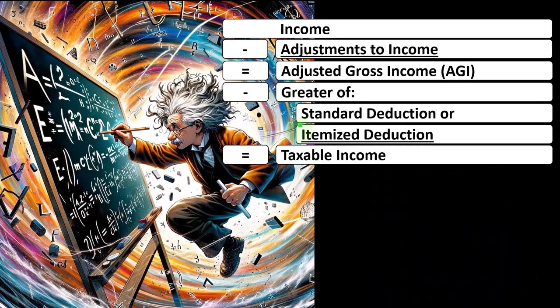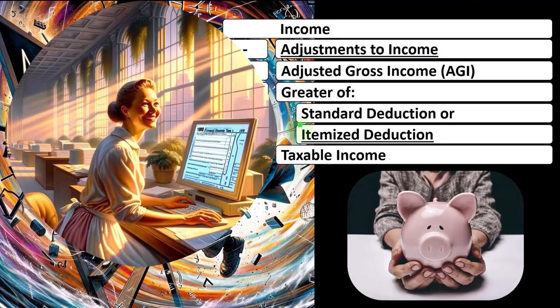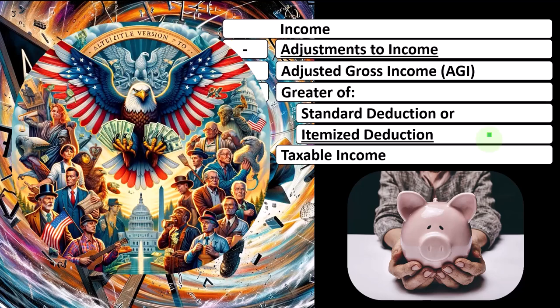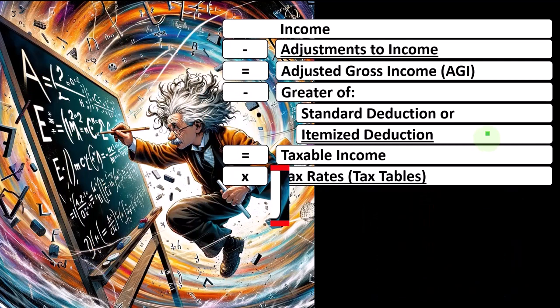If they change the charitable deduction rules, or if they want people to save for retirement, they can change the deductibility of putting money into an IRA. These are attempts to change your behavior. You can argue whether the government should be in the business of trying to change your behavior, or whether they should simplify the tax code and let people make their own decisions about retirement, contributing to charity, and so on.